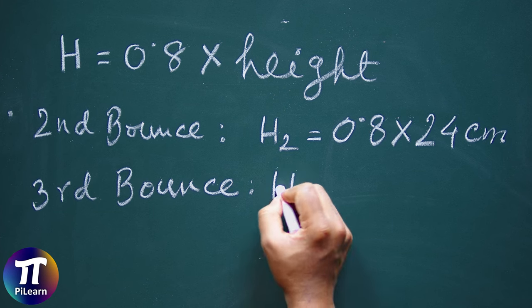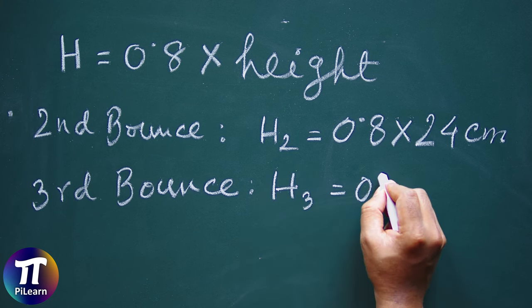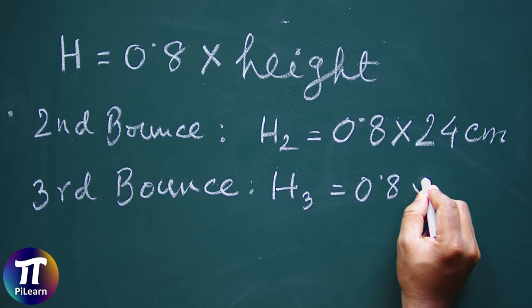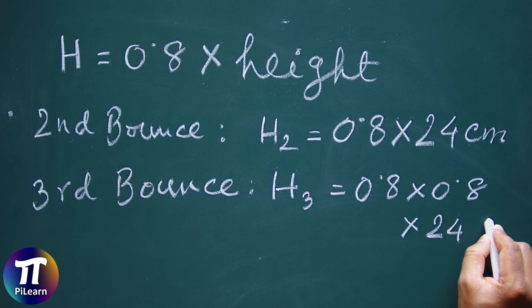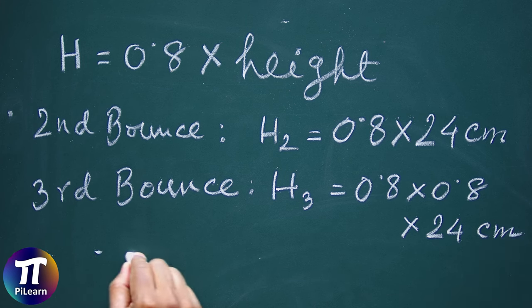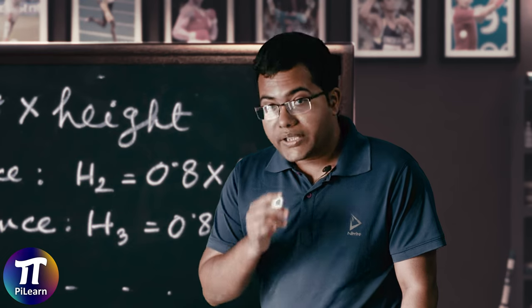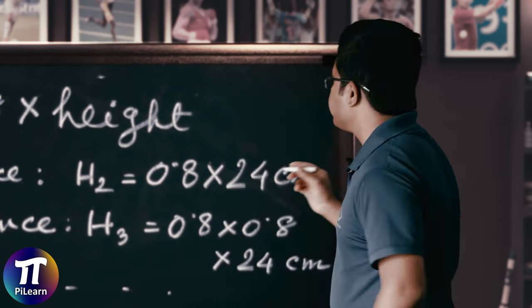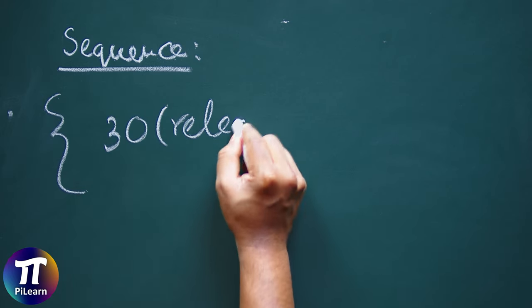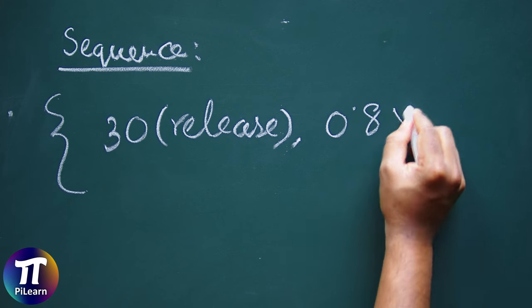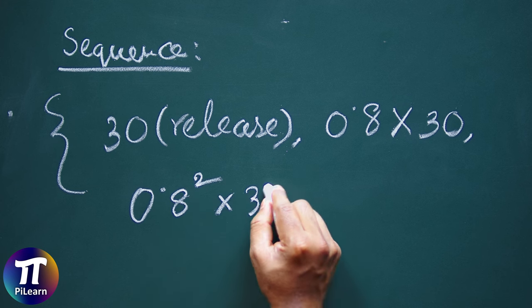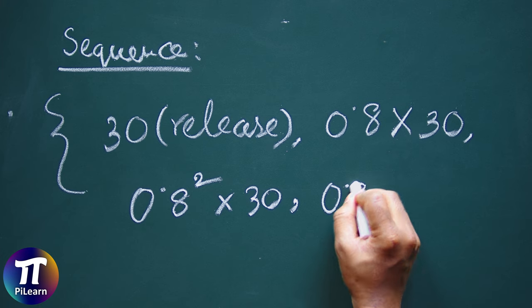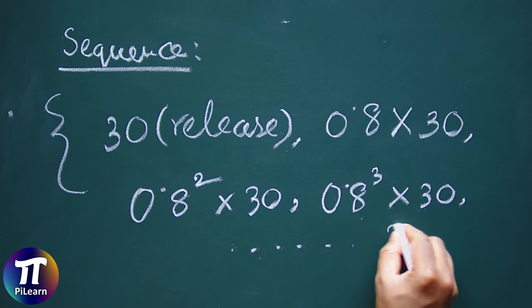What about the third bounce? It has to be 0.8 times 0.8 times 0.8 times 24 centimeter, and so on. So we can write down the height of each bounce as a sequence: 30, 0.8 times 30, 0.8 squared times 30, 0.8 cubed times 30, and so on. This sequence is called a geometric progression.